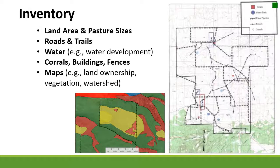Water development such as water tanks or even ephemeral streams can be really important to inventory so you know what resources exist at this point in time. Things like corrals, buildings, fences — any kind of infrastructure is good to have an inventory of. All of these things can be put into maps. Good land management requires a good map, and with GIS this is made much easier.